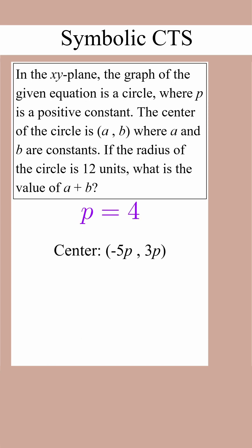Now that we know the value of p, we can comfortably answer the follow-up question. If p is equal to 4 and the center is negative 5p comma 3p, that means the center is negative 20 comma 12, and a plus b will be equal to negative 20 plus 12, which is equal to negative 8.